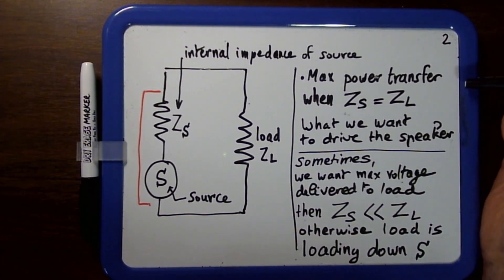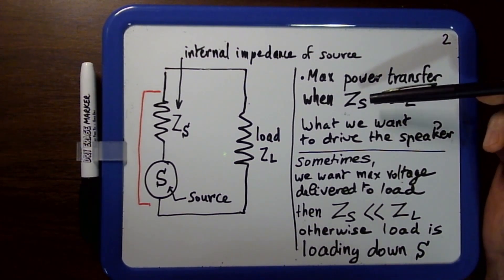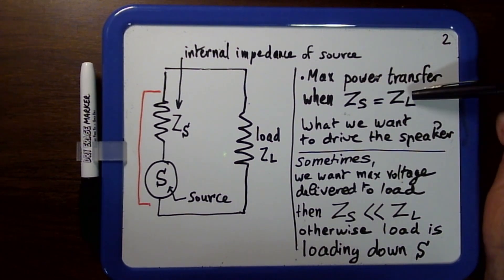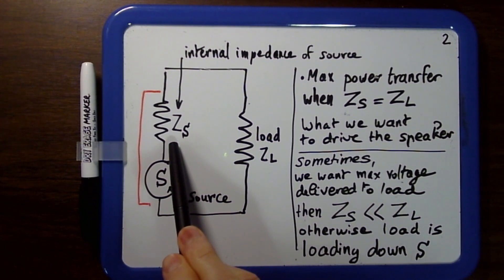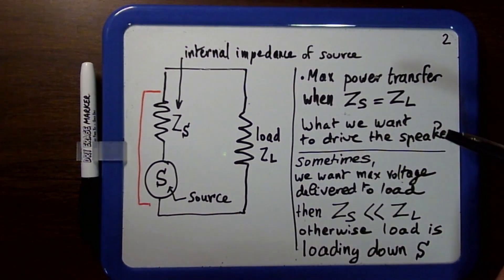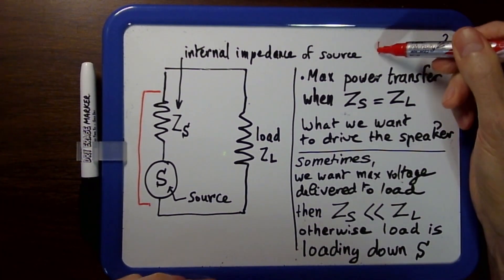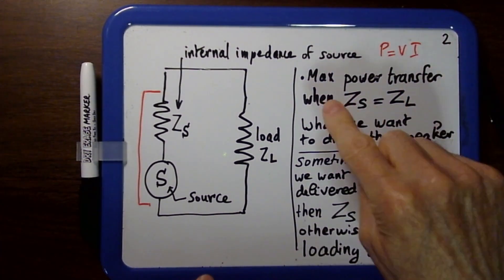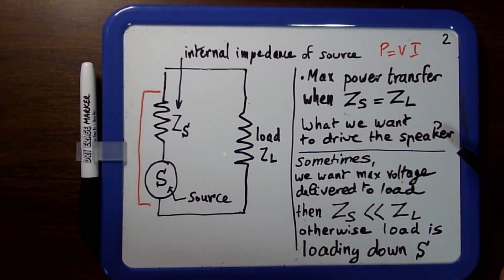These are basic concepts that are very important. You have maximum power transfer when Zs is equal to Zl — when the internal impedance of the source equals the load impedance. That gives you maximum power transfer, and remember that power P equals V times I. Maximum power transfer is what we want to drive the speaker.